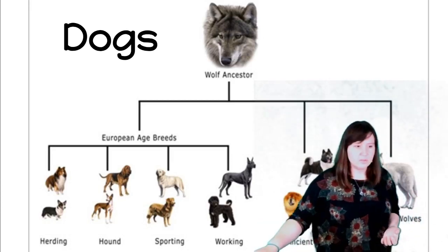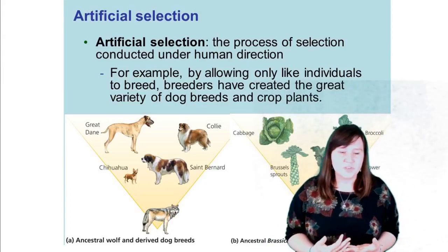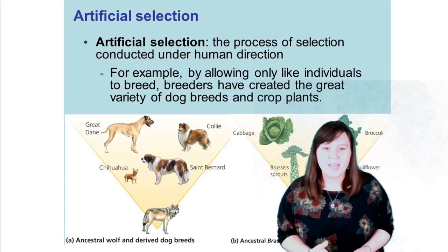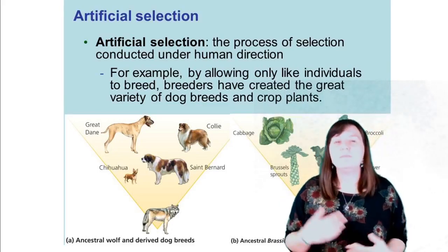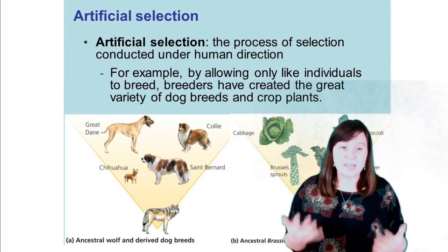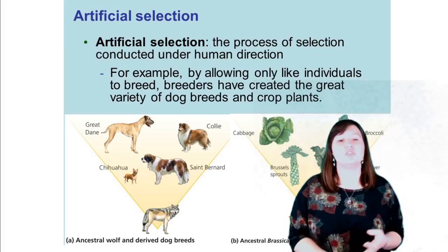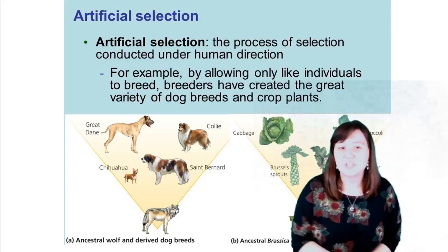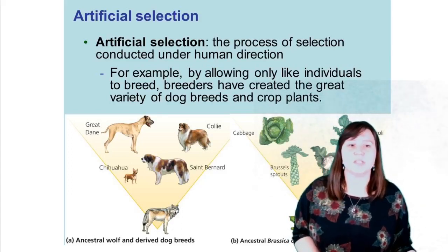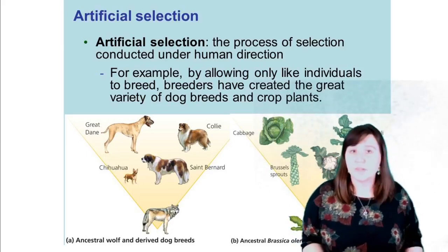This process of breeding for a specific trait is called artificial selection, and humans have done this with many things. Some animals include dogs, horses, cows, sheep, goats, pigs, chickens, and turkeys. Humans have also done this with plants like corn, tomatoes, and wild mustard or wild cabbage.